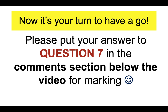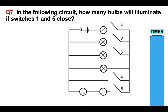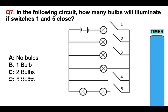Please put your answer to question seven in the comment section below the video for marking. In the following circuit — the same circuit as before — how many bulbs will illuminate if switches one and five close? Is it A, no bulbs; B, one bulb; C, two bulbs; D, four bulbs; E, five bulbs; or F, six bulbs? You have the time it takes the timer to go down to answer the question. Make sure you double check your answer.